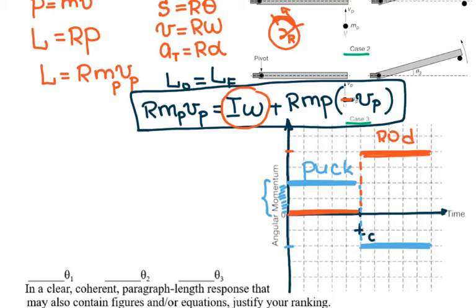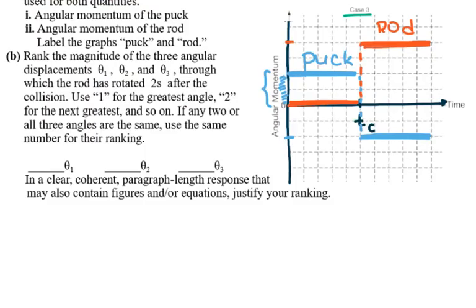Part B is very interesting: rank the magnitude of the three angular displacements θ₁, θ₂, and θ₃ through which the rod has rotated two seconds after the collision. Use 1 for the greatest and 3 for the smallest. If any two or all three angles are the same, use the same number for their ranking. Provide a clear, coherent paragraph-length response with figures or equations to justify your ranking.